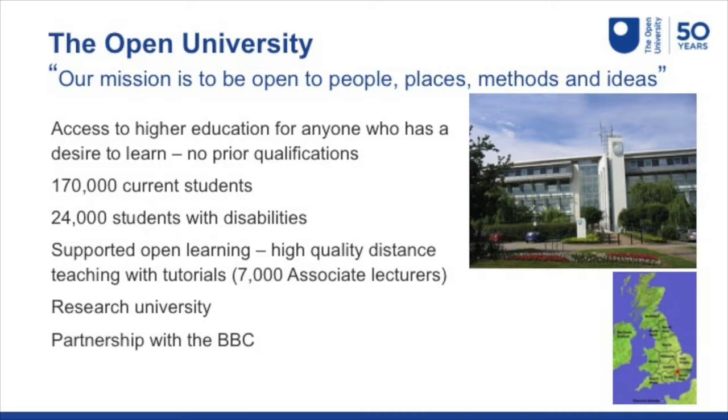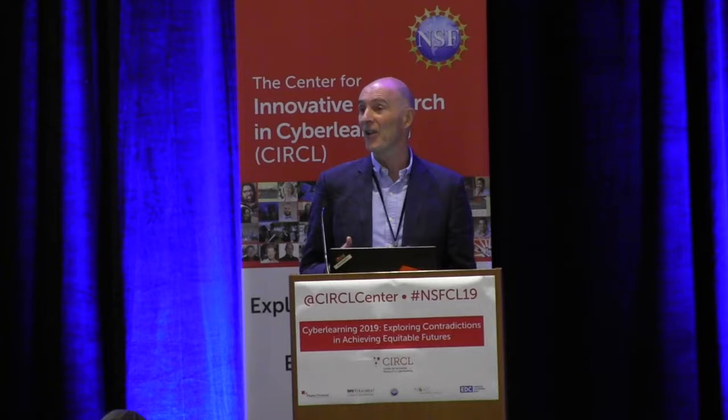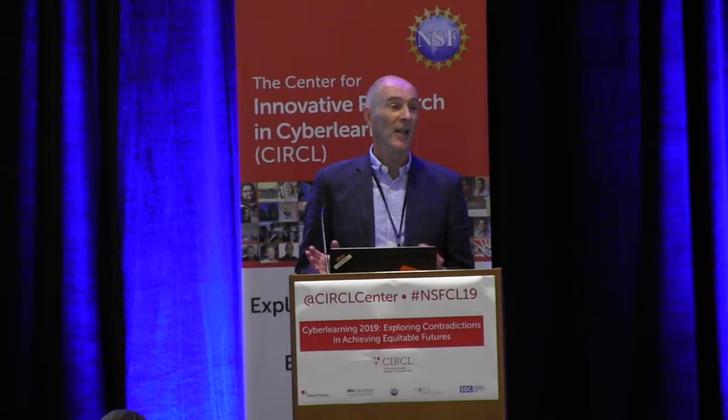It provides access to higher education for anyone who has a desire to learn — no prior qualifications required, and at all ages. The youngest graduate is age 14, the oldest is 95. There are 170,000 current students, making it the largest university in the UK and one of the largest in Europe. Because it's open to anyone, we have a special interest in supporting people with disabilities — 24,000 students with disabilities — and right from the start the aim was to provide the highest quality teaching and learning.